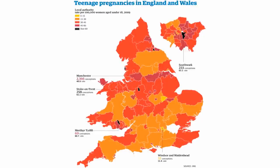Let's move on to the last example, which is about teenage pregnancy in England and Wales. Here's a map which shows different rates of teenage conception in different parts of the UK, scaled relative to the population of each local authority area, with colouring showing where rates are particularly high or low. For example, Southwark in London and Merthyr Tydfil in Wales have particularly high rates, whereas Windsor and Maidenhead has a much lower rate.